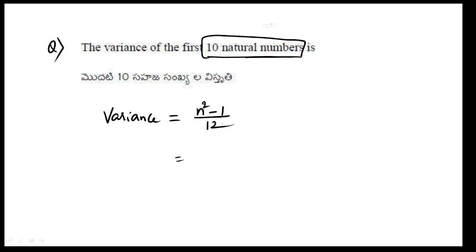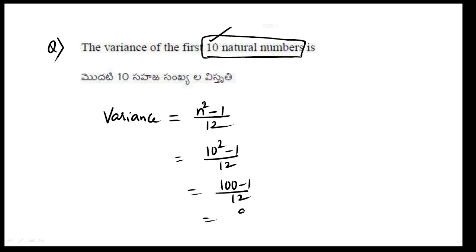Variance formula is n² - 1 by 12. So, where n is given here, take n as 10. So 10² - 1 by 12, that is 100 - 1 by 12, which is equal to 99 by 12.